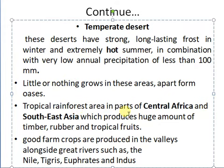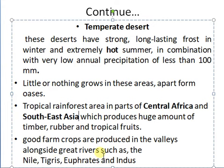Tropical rainforest areas in parts of central Africa and Southeast Asia produce huge amounts of timber, rubber and tropical fruits. Additionally, good farm crops are produced in the valleys alongside great rivers such as the Nile, Tigris, Euphrates and Indus. The lands alongside rivers are quite fertile and suitable for cultivation, so the Muslim world lands alongside these rivers are quite productive for vegetation.